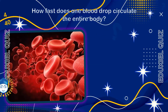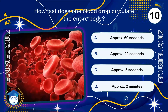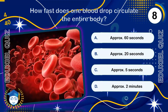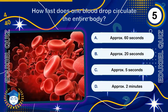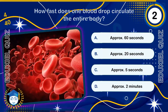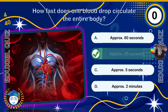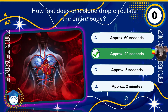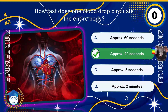How fast does one blood drop circulate the entire body? Approximately 20 seconds. This is an astonishing speed, highlighting the efficiency of the circulatory system in supplying oxygen and nutrients to all tissues.